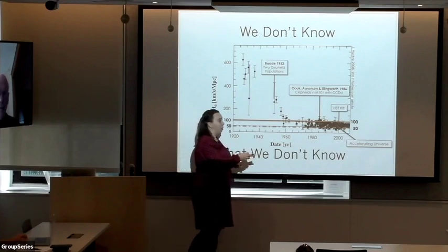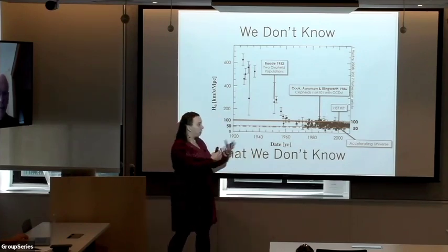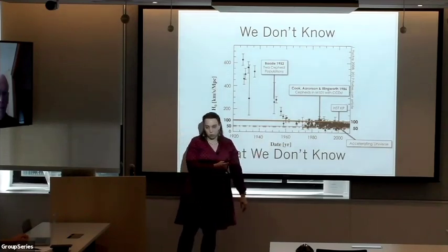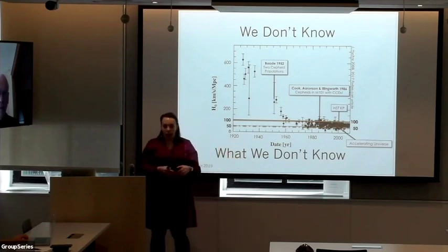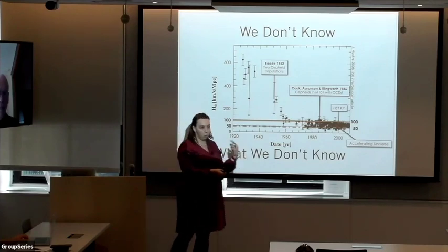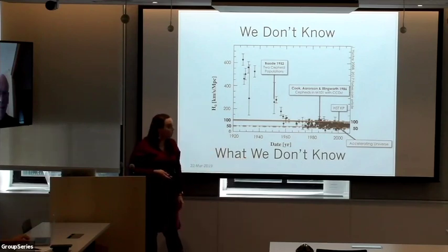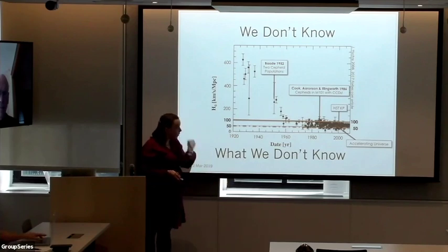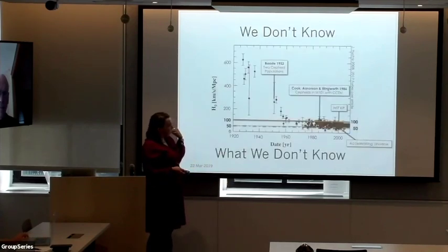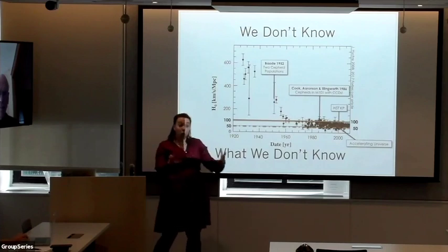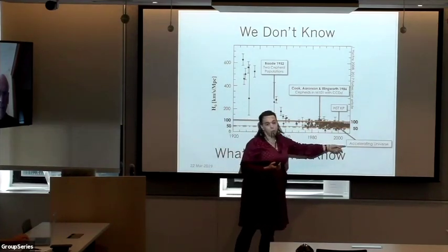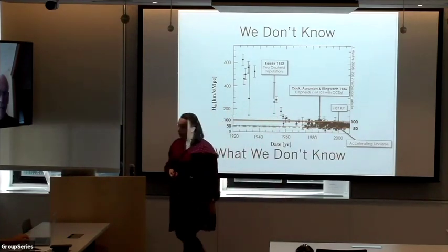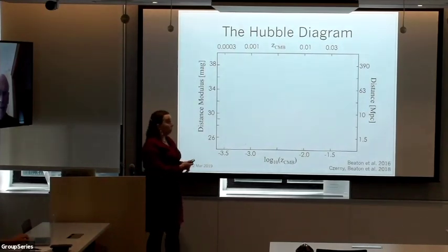Wendy Friedman, one of my mentors, led the team that ultimately solved the factor-of-two controversy in 2001. It was solved with dozens of people working very hard, taking detailed measurements with the Hubble Space Telescope over about a decade. That solidified the Hubble constant at 72, plus or minus about 10%. Today we're in a new controversy. The reason people get excited is because hiding in these historical controversies have been things like the accelerating universe.